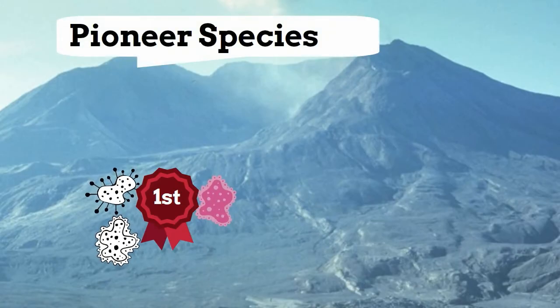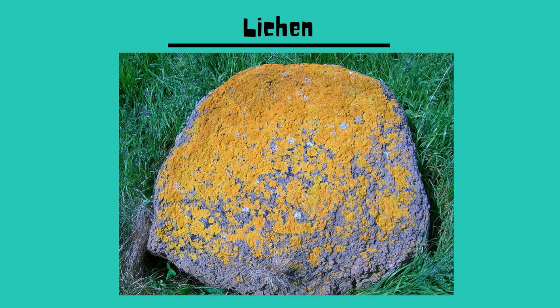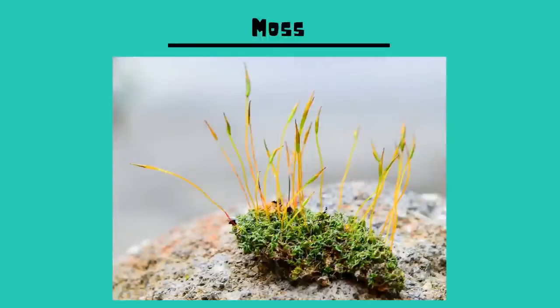A lichen is an interesting individual and is a combination of algae or bacteria that lives among fungi. Lichen can grow on almost any surface and does not need soil to grow. Moss is a non-vascular plant that can also grow on almost any area and does not need soil.